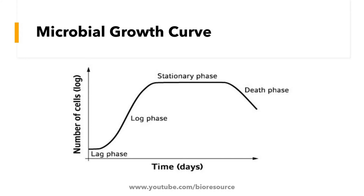The microbial growth proceeds in four different phases: the lag phase, log phase, stationary phase, and the death phase. The lag phase is the initial phase where the bacterial cells get adapted into the new media. The next phase is the log phase, where the bacteria starts to grow exponentially utilizing the nutrients. As nutrient levels come down and toxic products accumulate, it reaches the stationary phase, followed by the death phase.